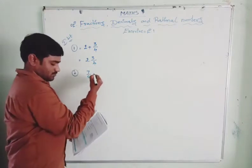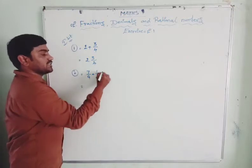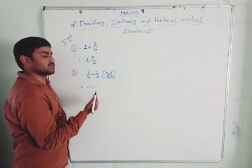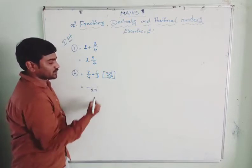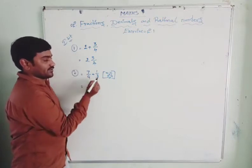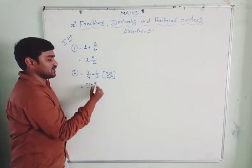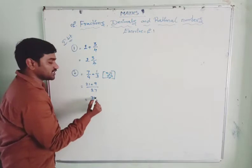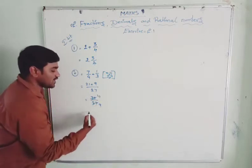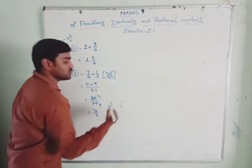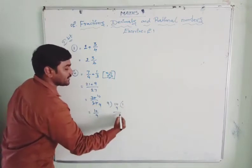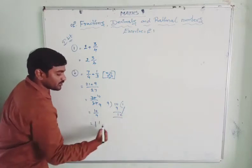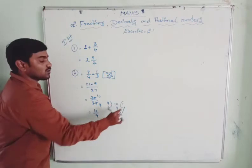Second one: 7 by 9 plus 1 by 3. For these kinds of questions, you can use cross multiplication or LCM. LCM can feel a little difficult, so go for cross multiplication. Multiply the two denominators: 9 into 3 is 27. Then cross multiply: 3 sevens are 21, plus 9 ones are 9, giving 30 by 27. Simplify to 10 by 9. To change 10 by 9 into a mixed fraction: 9 goes once with remainder 1, giving 1 whole 1 by 9. That is the answer.